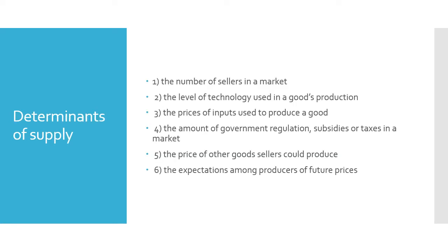The determinants of supply are as follows. First, when the number of sellers in the market increases, supply may also increase. Second, an advancement in technology used to produce a product will lead to an increase in production of that product. Third, the prices of inputs used to produce a good — for example, an increase in the cost of livestock feed will cause sellers to sell livestock at an earlier time and for a lower price.